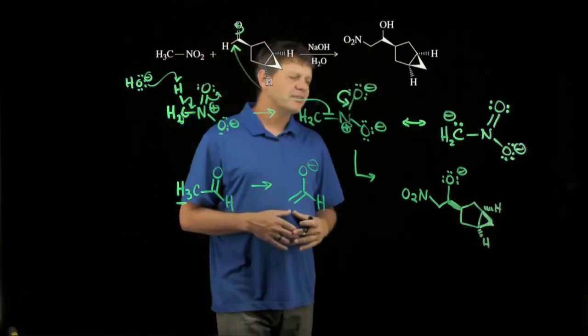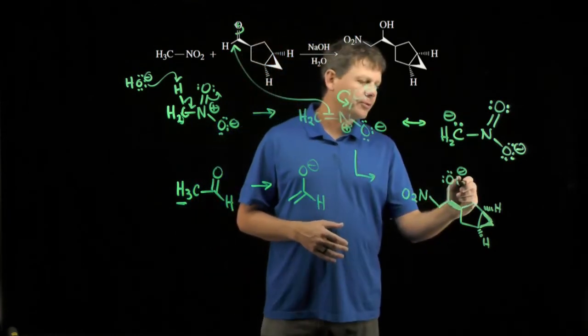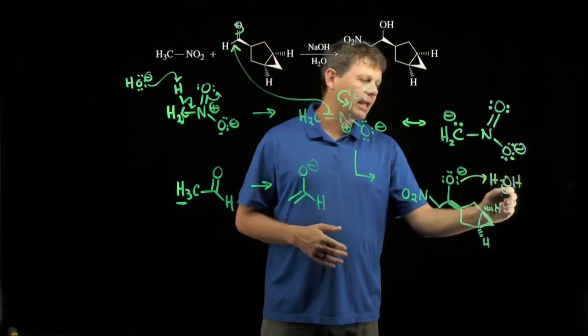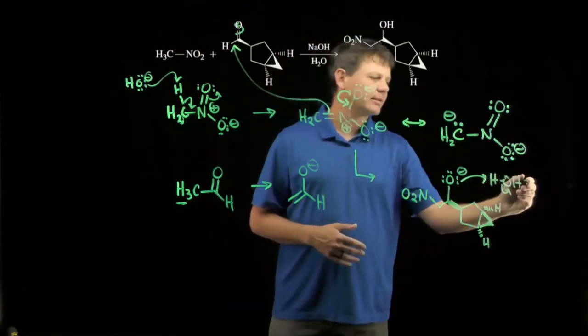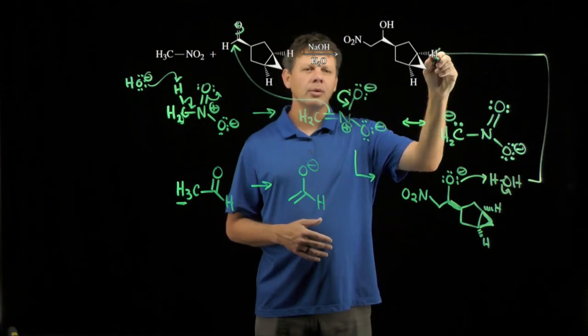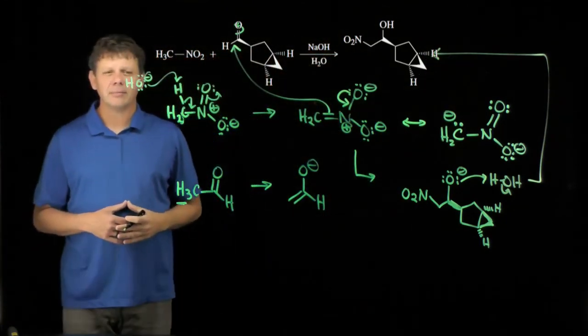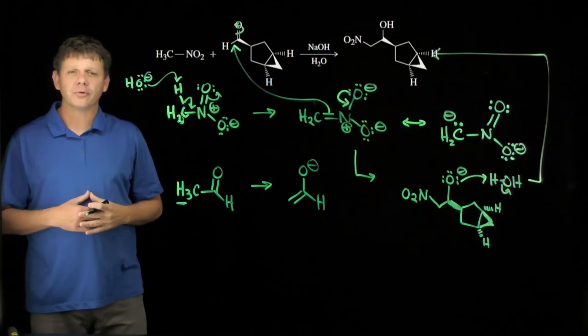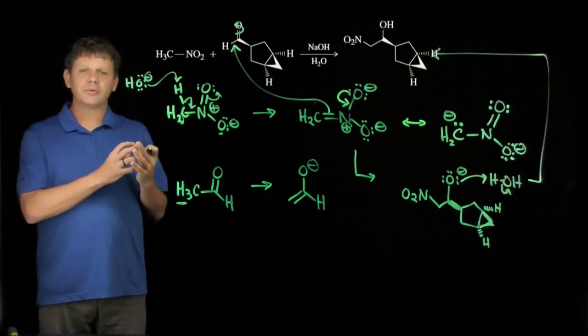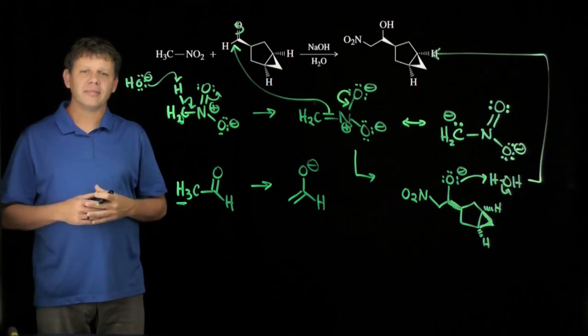And then the reaction is going to finish in the same way that all of our aldol reactions do, by removing a proton from water and regenerating our base catalyst. And so we end up with that product. So this is the mechanism of this so-called nitroaldol reaction, just like the normal aldol, except we're using a nitro group to help stabilize the enolate.